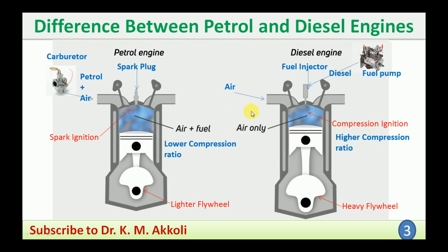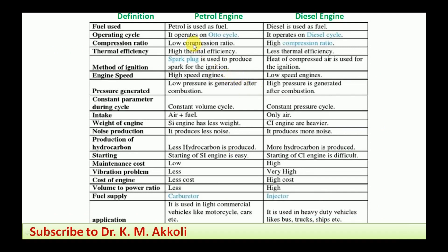To summarize the key differences: fuel used — petrol engine uses petrol, diesel engine uses diesel. Operating cycle — petrol engine operates on the Otto cycle, diesel engine on the diesel cycle. Compression ratio — low for petrol, high for diesel. Thermal efficiency — higher for diesel, lesser for petrol. Method of ignition — spark plug for petrol engine; compressed air for ignition in diesel engine. Engine speed — petrol engines are high speed; diesel engines are low speed. Pressure generated — low pressure after combustion in petrol engine, high pressure in diesel engine. Constant parameter — constant volume cycle for petrol, constant pressure cycle for diesel.